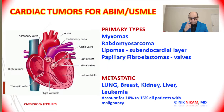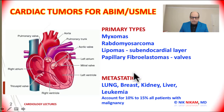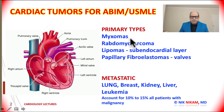Cardiac tumors can be of two different types, namely the primary cardiac tumors or metastatic cardiac tumors. Among the primary cardiac tumors, myxomas are the most common tumors that we encounter in the adult population. In the younger age group, rhabdomyosarcoma is commonly seen.